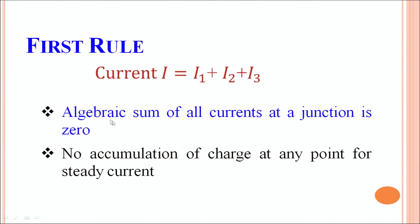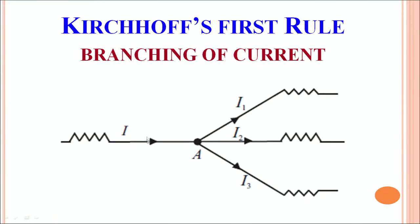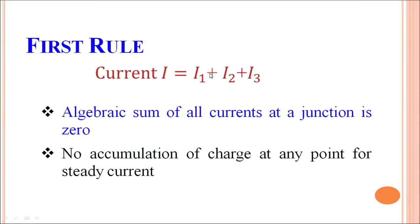The rule can also be written as: the algebraic sum of all currents at a junction is 0. Current I is proceeding towards A, so it is considered positive. I1, I2, and I3 are going away from A, so they are negative. Therefore, I minus I1 minus I2 minus I3 equals 0. The first rule also states that for steady currents there will be no accumulation of charge at any point in an electrical circuit.